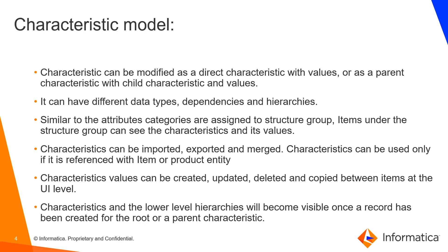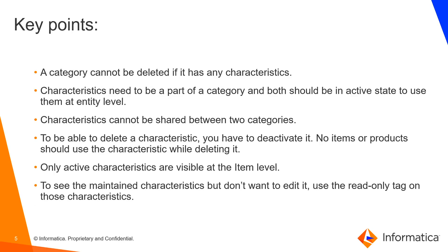Characteristics and lower-level hierarchies become visible once the record has been created for the root or parent characteristic. A few important points to remember: a category cannot be deleted if it has any characteristics — we need to remove the characteristics first, then remove the category. Characteristics need to be part of a category, and both should be in an active state to use them at the entity level. If either the characteristic or the category is inactive, we cannot make use of that category under the product or entity level. Characteristics cannot be shared between two categories.